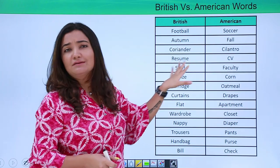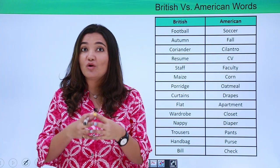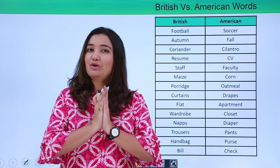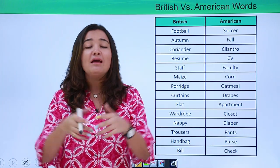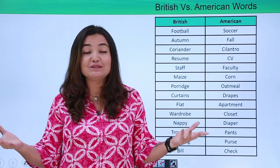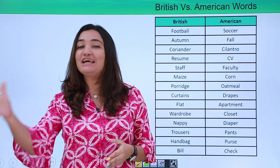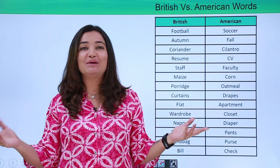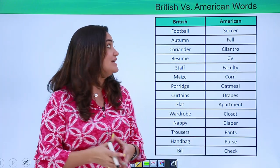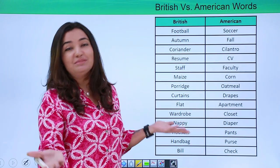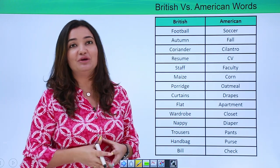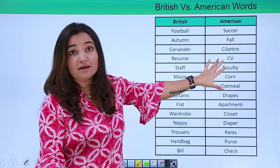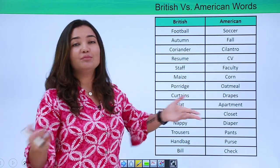How about coriander and cilantro? Coriander is a very commonly used herb in cooking. What if you visit a market searching for coriander, but little did you know that same herb is named cilantro? If you don't know this vocabulary, you'd end up confused. The same thing is called cilantro in American English and coriander in British English.